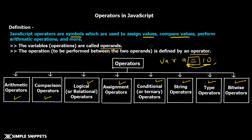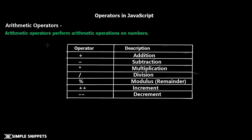Now I'm going to glance through each operator type so you can see the different operators, their meaning, and what they do. You can pause the screen to note them or take a screenshot. Starting with arithmetic operators in JavaScript: we have plus, minus, multiplication (star), division, modulus, increment, and decrement — used to perform arithmetic operations.